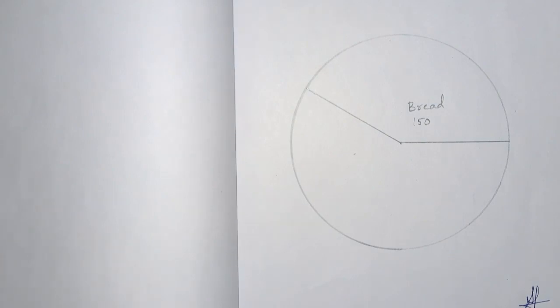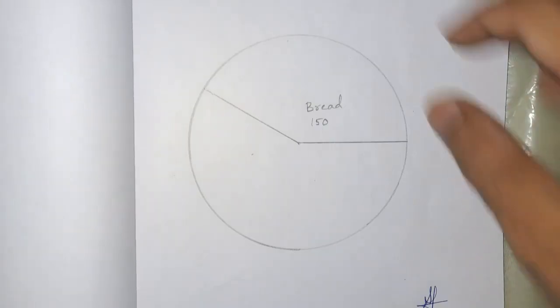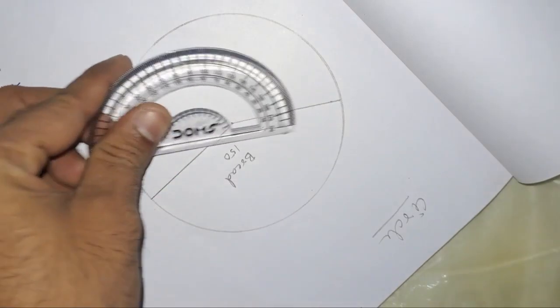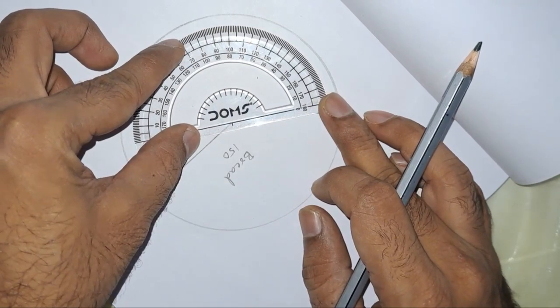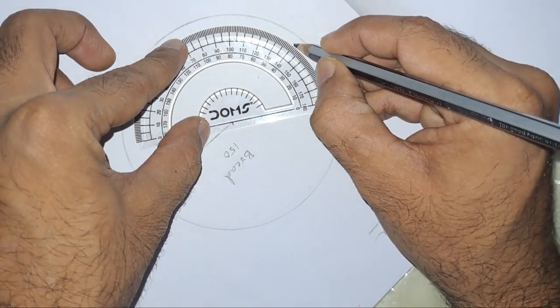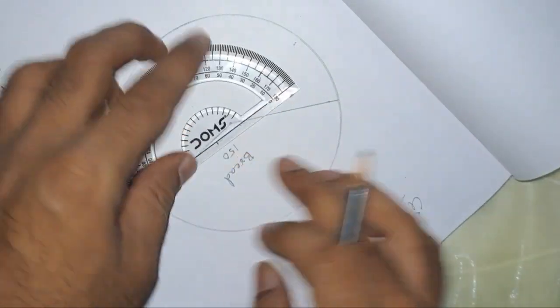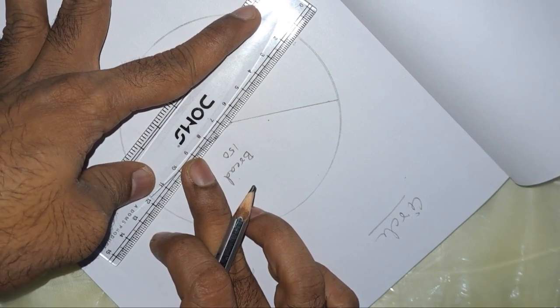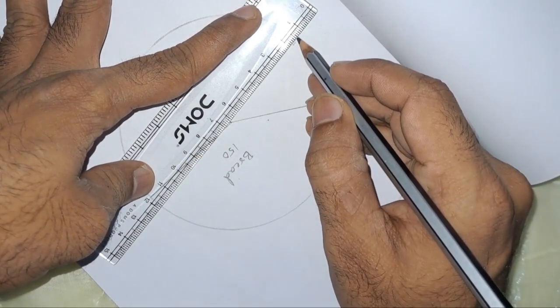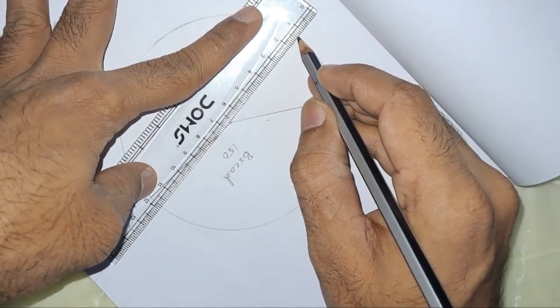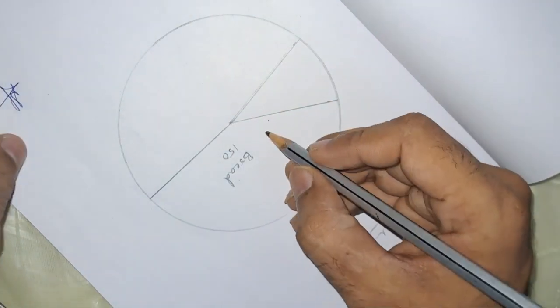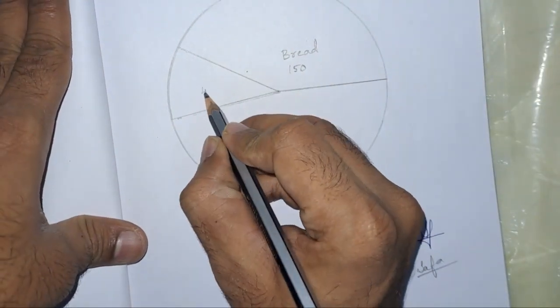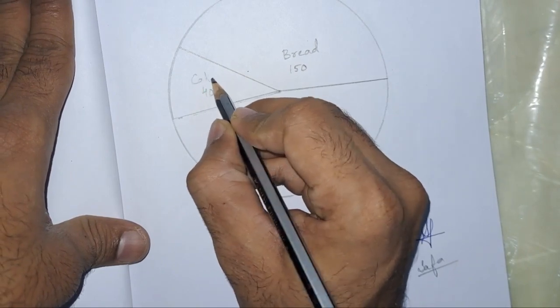Next, after this, we are having the cake. For cake, we will draw 40 degrees. Now let us draw 40 degrees from here. This is 0, so here we will get 40 degrees. Let us join that with the center. This is 40 degrees, and the item name is cake.